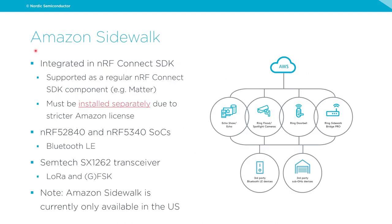The last generic update is about Amazon Sidewalk, which we covered on the previous webinar. At that time it had to be used with NRF Connect SDK 2.2 and was available separately. Now it has been integrated into the NRF Connect SDK as a regular component, similar to Matter. It follows the NRF Connect SDK planning and maintenance cycles. However, it's not available by default when you install the SDK — you still need to install it separately.